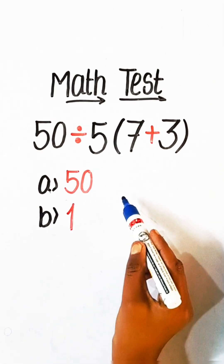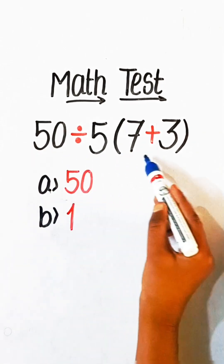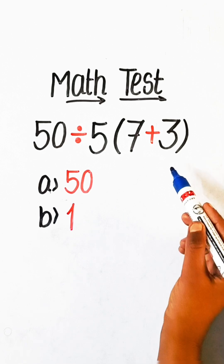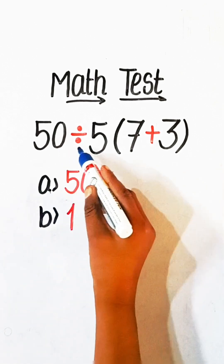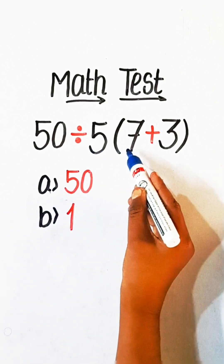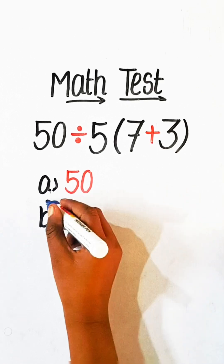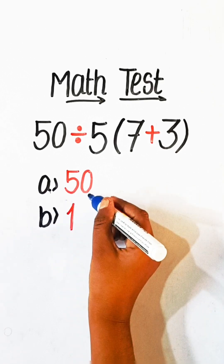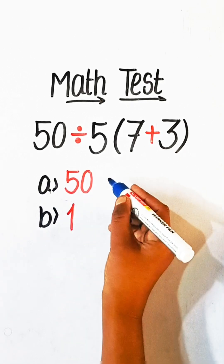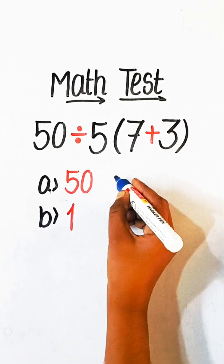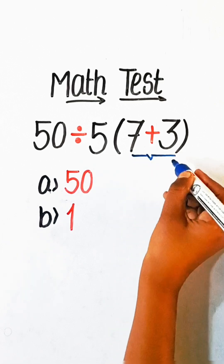Hello everyone. In this video we will solve this basic math equation: 50 divided by 5 under bracket 7 plus 3 equals to what? Option A: 50, Option B: 1. So let's solve this — first we have to solve the bracket part.